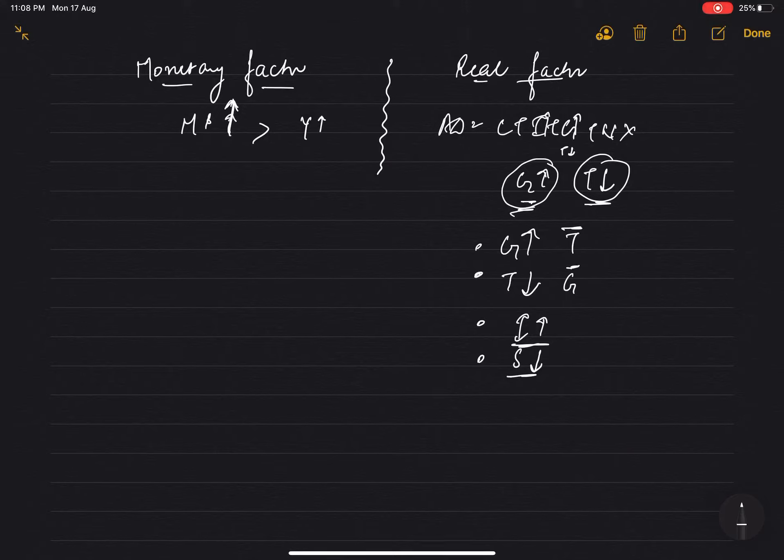Increase in NX - NX means export minus import subtracted. When exports increase and imports decrease, these are real factors. In real factors: G increased, I increased, in NX, X increased and M decreased, investment increased so savings decreased. And if G increased with taxation constant, or taxation decreased with government spending constant. So all these are real factors.